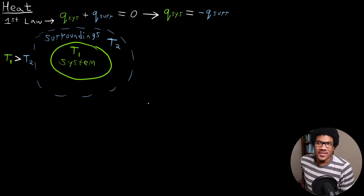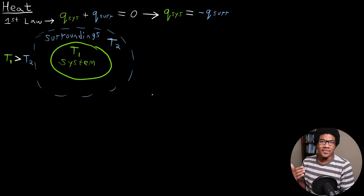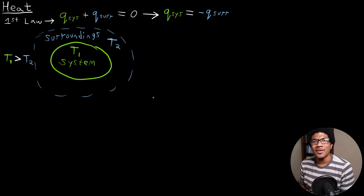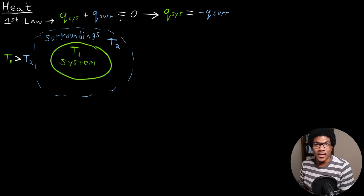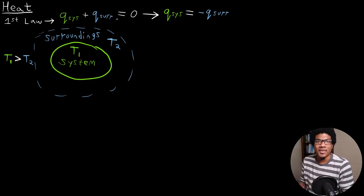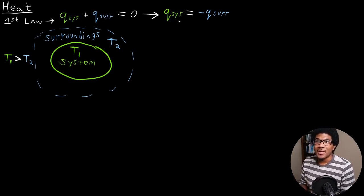In this video we're going to discuss heat and calorimetry. When discussing the first law of thermodynamics, we introduced heat as a type of energy, and we established that the first law tells us that energy cannot be created nor destroyed. In accordance with the first law, if you've defined a system and surroundings, the sum of the heat transfer of your system and surroundings must equal zero. This sets up an interplay where if heat is gained by your system, heat is lost by the surroundings, and vice versa.